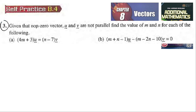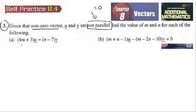Given that it is a non-zero vector and not parallel, if not parallel we just make it equal to zero. Find the value of m and n for each of the following. We cannot compare it directly because it is not parallel, so what we do is take this one equal to zero.